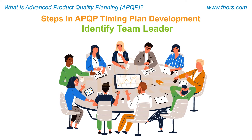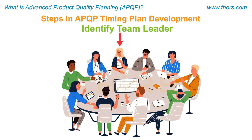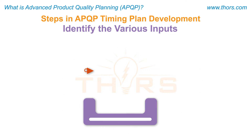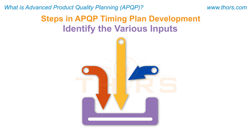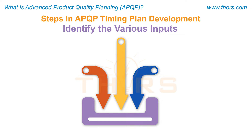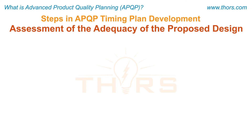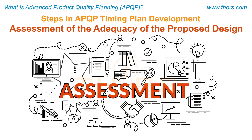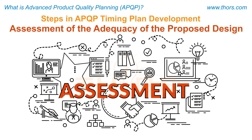In the second step, a team leader is identified from the team to manage the planning process. In the third step, the multidisciplinary team identifies the various inputs and defines the customer expectations on the product and the system. The fourth step is the assessment of the adequacy of the proposed design and the manufacturing feasibility by the multidisciplinary team.